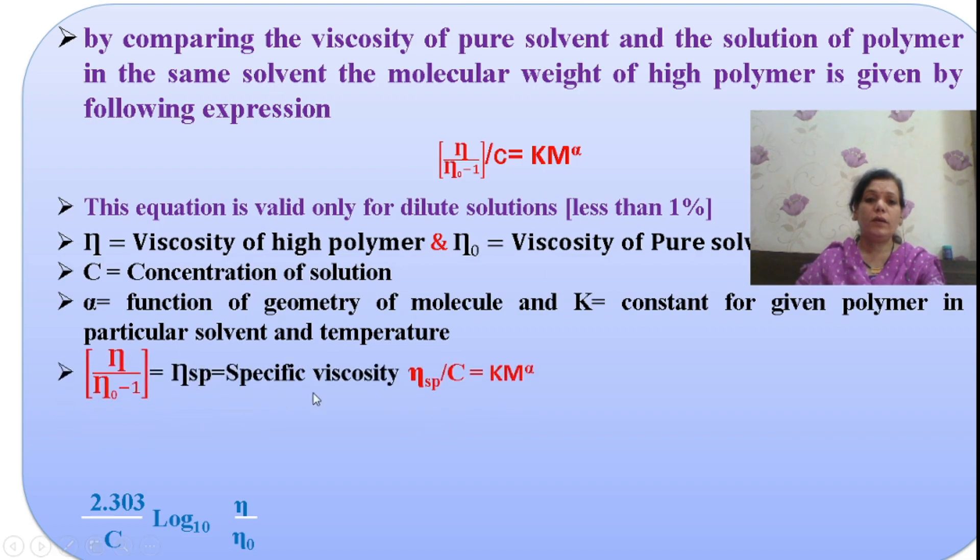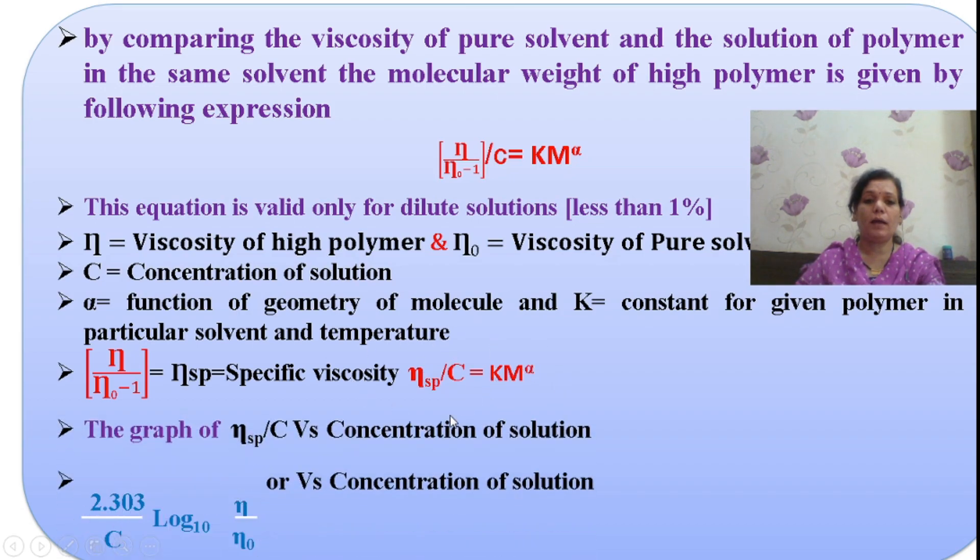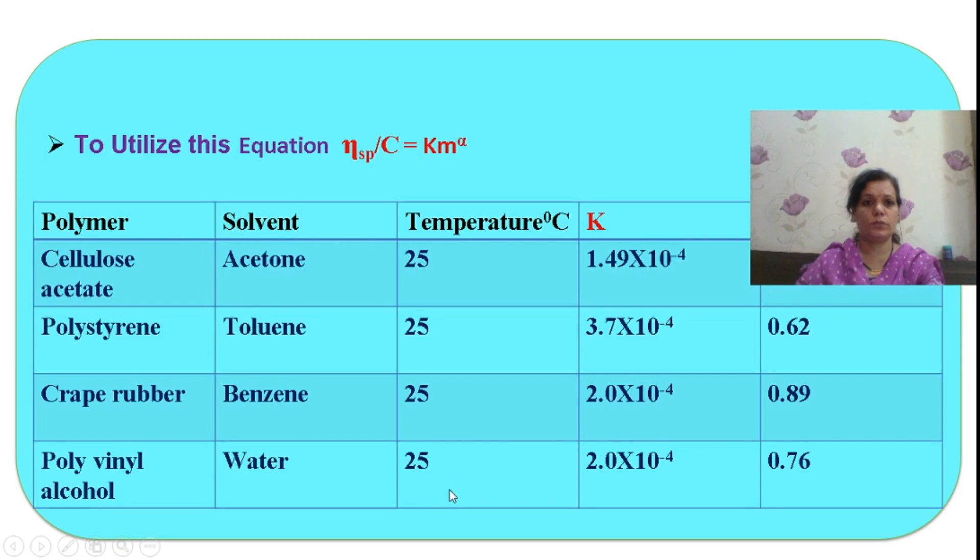Ultimately we are going to relate the specific viscosity with respect to concentration, the K M raised to alpha value. We plot ηsp/c versus concentration of solution. The second plot is 2.303/c log η/η₀ versus concentration of solution. For some polymers with their solvent and temperature conditions, I have provided few values of K and alpha.